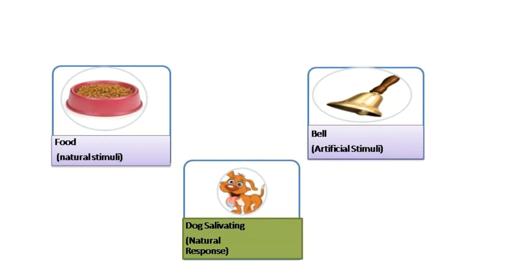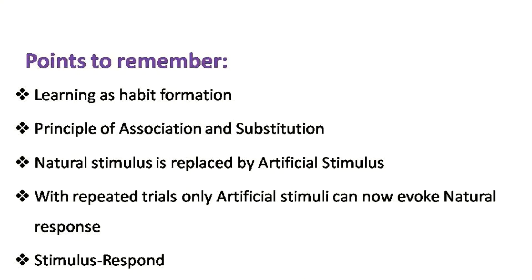In this experiment, Pavlov represented food as the natural stimulus, the bell as the artificial stimulus, and saliva as the natural response. On the basis of this experiment, Pavlov considered learning as habit formation based on the principle of association and substitution — meaning habit is formed or learned as a result of association and substitution. The natural stimulus (food) and the artificial stimulus (bell) became so perfectly associated that even without food, the dog responded by salivating to the bell alone. Thus the natural stimulus was substituted or replaced by the artificial stimulus, since even in the absence of the natural stimulus, the artificial stimulus evoked the natural response.